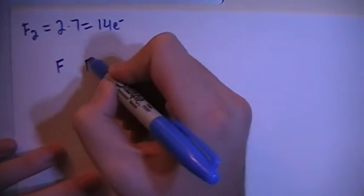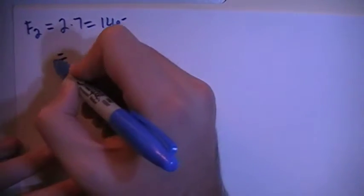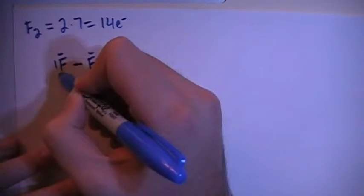Alright, so we have the two fluorines. We can go ahead and start by single bonding them together and filling in each of the fluorines' octets.